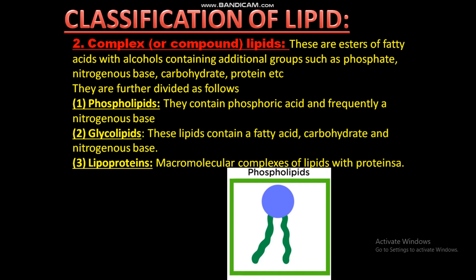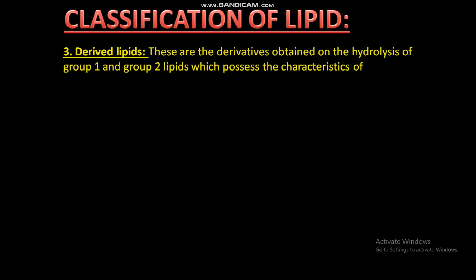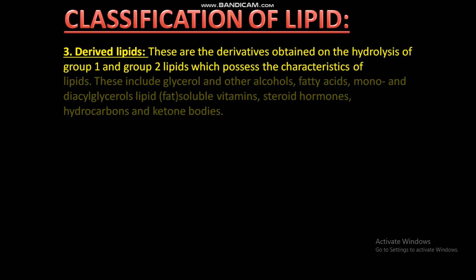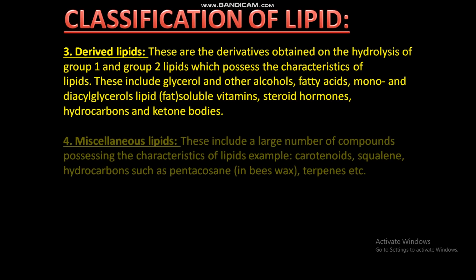3. Derived lipids: these are the derivatives obtained on the hydrolysis of group 1 and group 2 lipids. These include glycerol and other alcohols, fatty acids, mono and diacylglycerols, fat-soluble vitamins, steroid hormones, hydrocarbons, and ketone bodies.